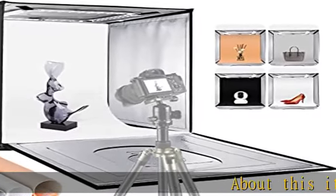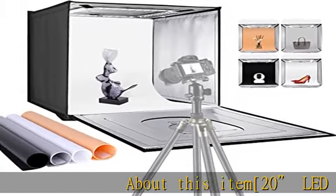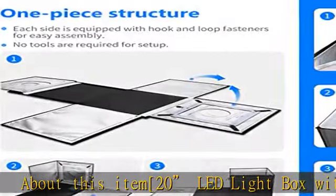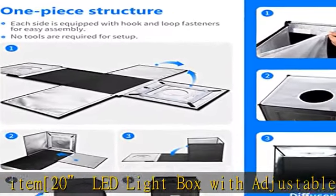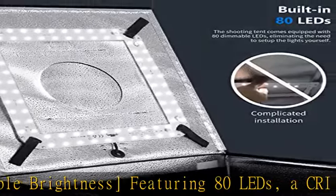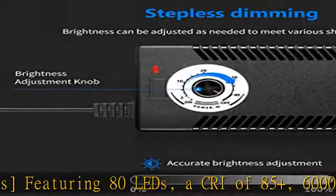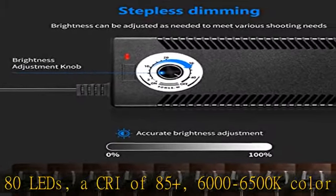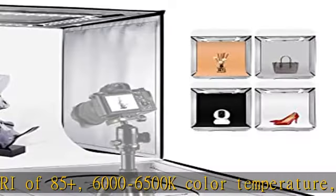About this item: 20-inch LED light box with adjustable brightness featuring 80 LEDs, a CRI of 85+, and 6000-6500K color temperature. The 20x20x20 inch (50x50x50cm) light box provides bright white light to showcase your products.